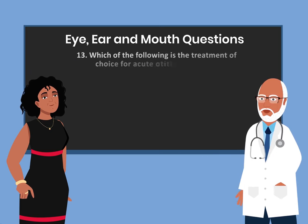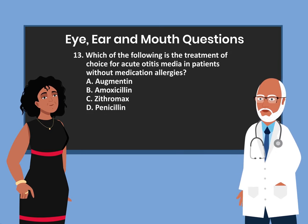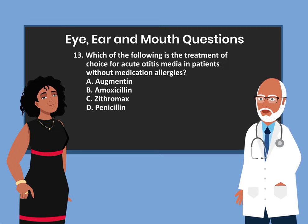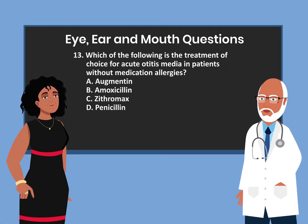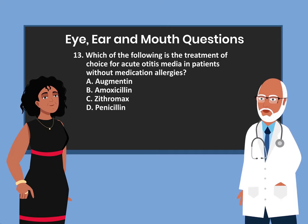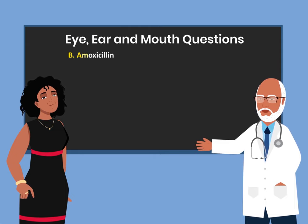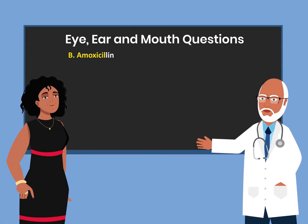Question 13. Which of the following is the treatment of choice for acute otitis media in patients without medication allergies? A. Augmentin. B. Amoxicillin. C. Zithromax. D. Penicillin. The answer is B. Amoxicillin.